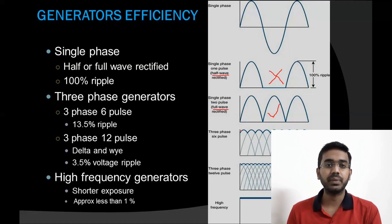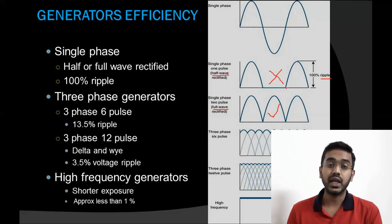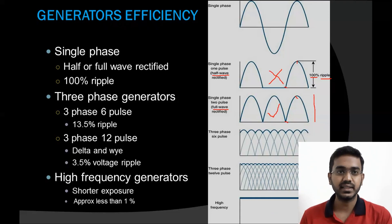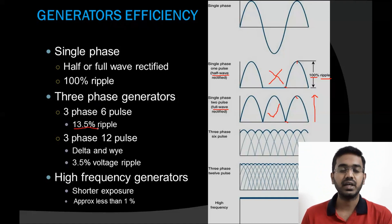One important term is ripple factor — ripple is the fluctuation of voltage. If voltage starts from zero and goes to maximum, it is called 100% ripple factor. In both half and full wave rectification, we have 100% ripple factor. In three-phase six-pulse generators, the ripple will be 13.5%, and in three-phase twelve-pulse generators using the delta and Y method, the ripple will be 3.5%.